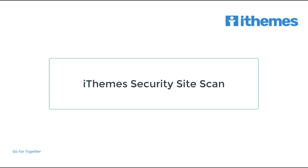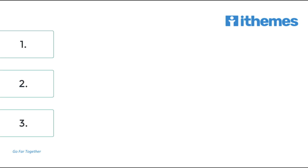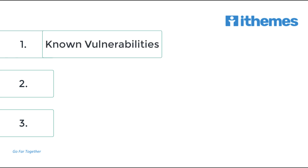Now let's talk about what the new site scan is actually going to look for. The first thing it's going to look for is to see if you have any software with known vulnerabilities installed on your site. This could be an outdated version of WordPress, a plugin, or even a theme installed on your site with a known vulnerability.